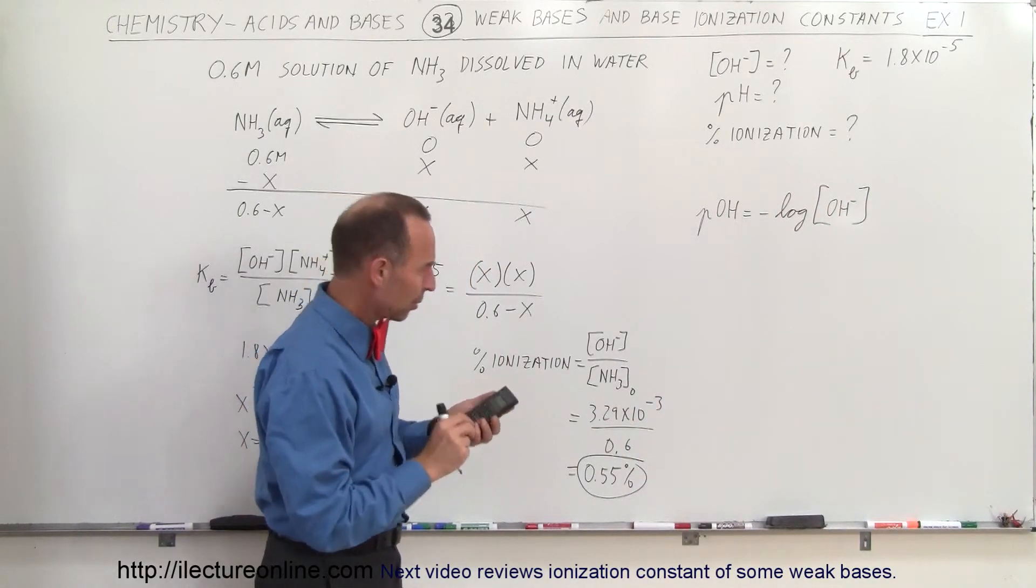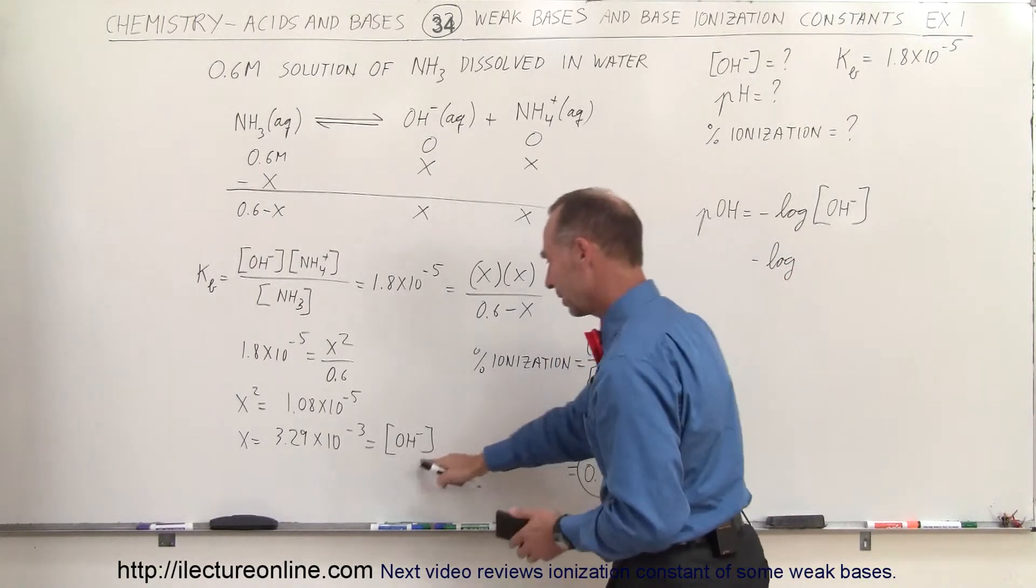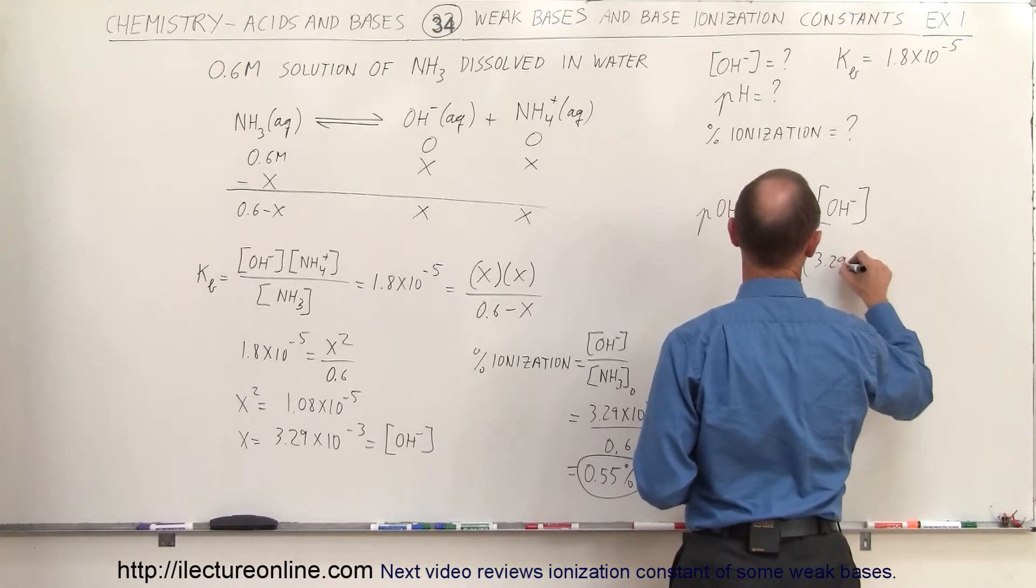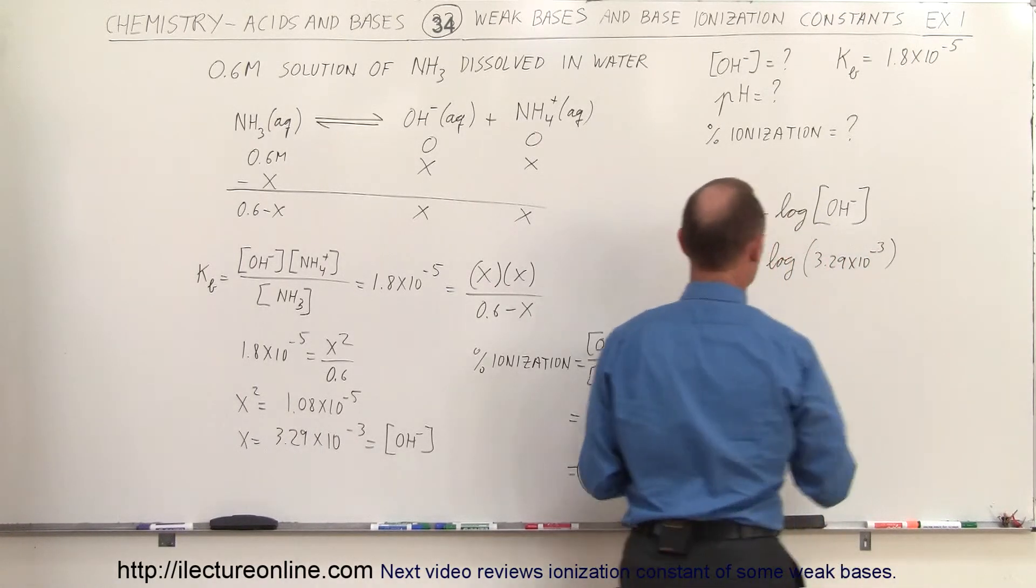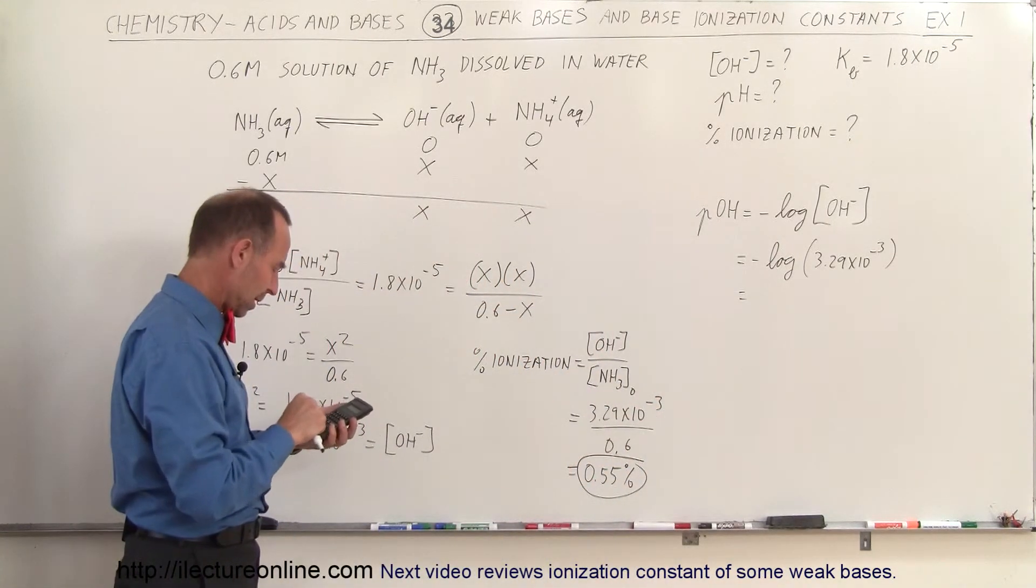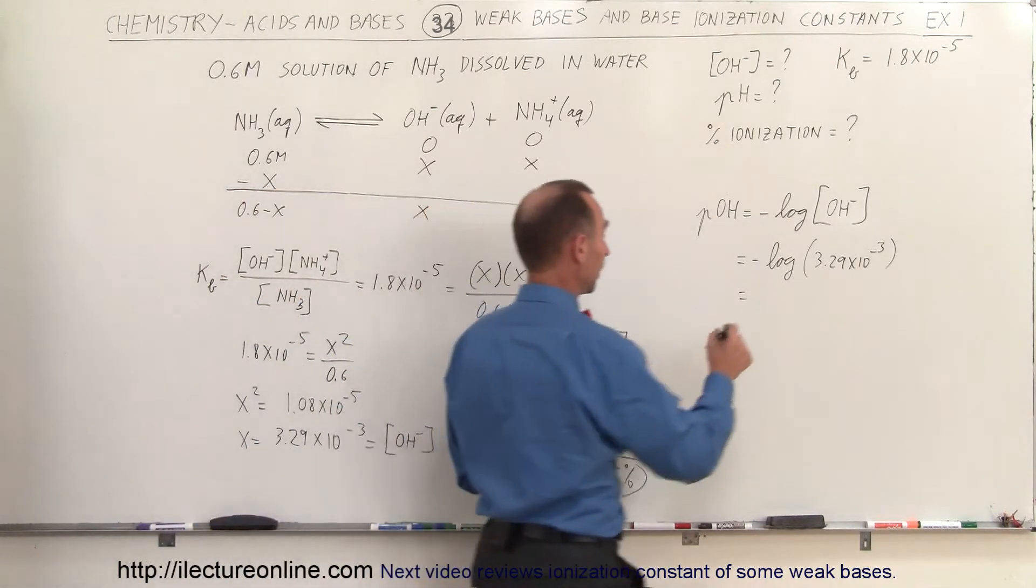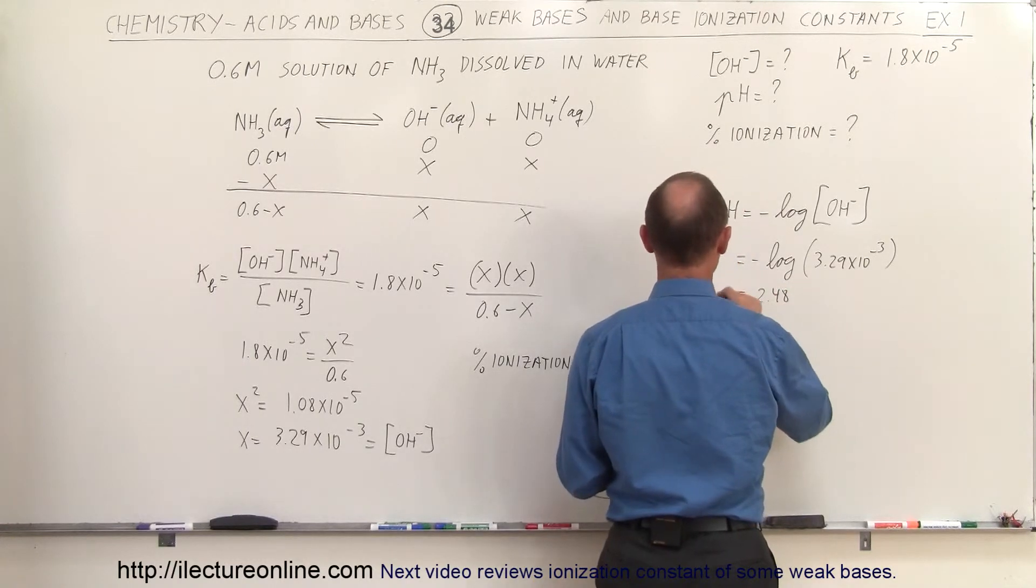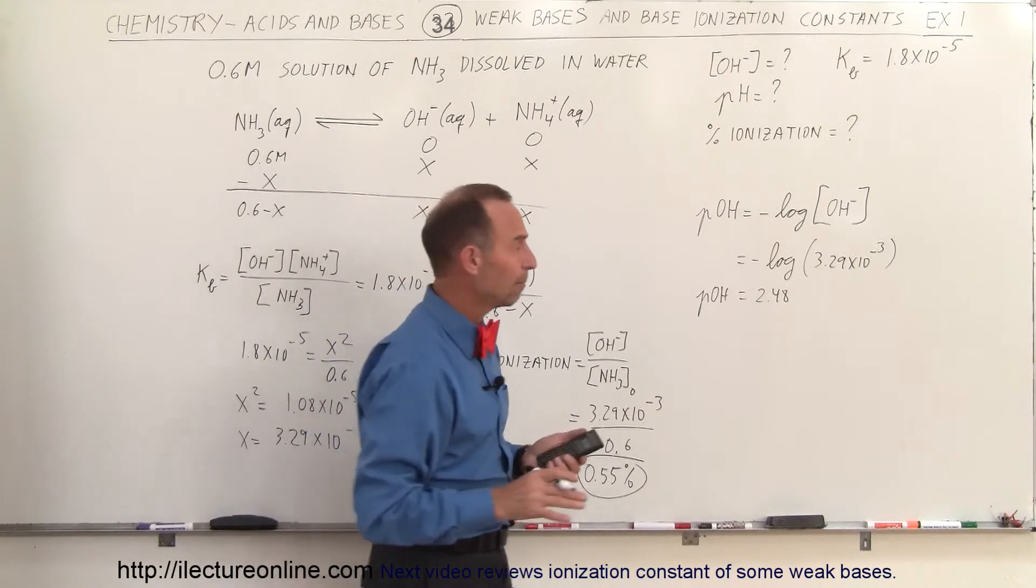And so let's see here, that would be minus the log, and I found the concentrations right here. That would be 3.29 times 10 to the minus 3. So we have 3.29 e to the 3 minus, take the log of that number, times minus. That gives me a positive 2.48. So that's the pOH, is 2.48. That makes it a basic solution.